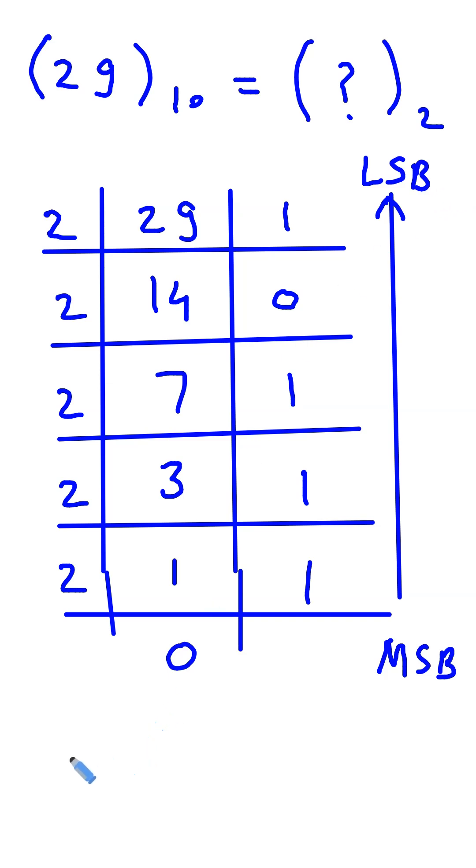So the final answer of 29 decimal will be like this: 11101. So it will be 11101 binary. This is how we can convert decimal into its equivalent binary.